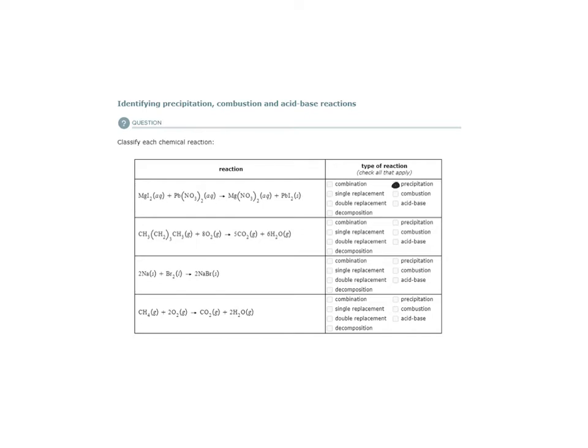Now, this precipitation reaction is also an example of a double replacement reaction, because this cation is now swapped with that anion to form magnesium nitrate, and this cation, the lead two plus, is swapped with the iodide cation to form lead two iodide. So this is actually a yellow precipitate that would come out when these two solutions are mixed.